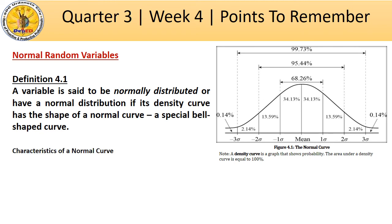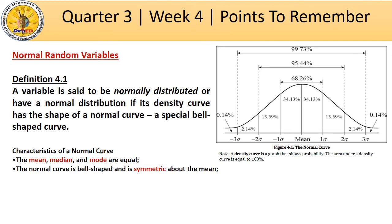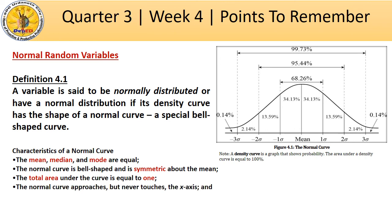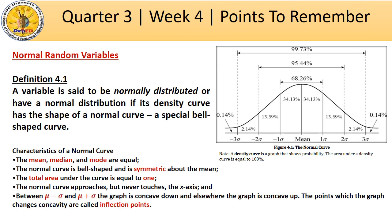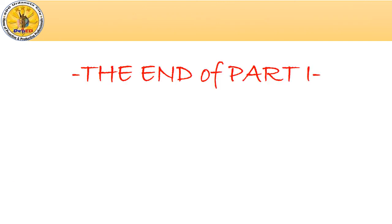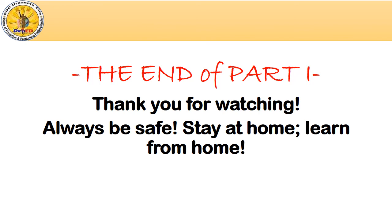Let's have a summary of the characteristics of a normal curve: the mean, median, and mode are equal; the normal curve is bell-shaped and symmetric about the mean; the total area under the curve is equal to 1; the normal curve approaches but never touches the x-axis; and between mu minus sigma and mu plus sigma the graph is concave down, while elsewhere it is concave up. The points at which the graph changes concavity are called inflection points. This is the end of part 1. Thank you for watching — always be safe, stay home, and learn from home. See you in part 2!